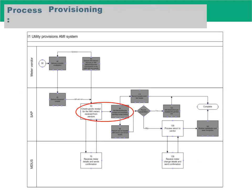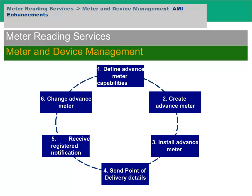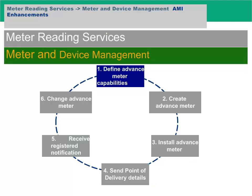This is the business process diagram for the meter provisioning process, starting from the meter vendor through installation in the field and getting registered in the network. This is the process cycle for the advanced meter installation and registration process. The main processes involved in this scenario are: define advanced meter capabilities, create advanced meter, install advanced meter, send point of delivery details, receive registered notification, and change advanced meter.